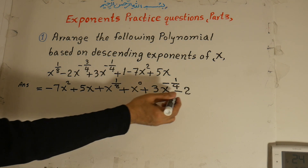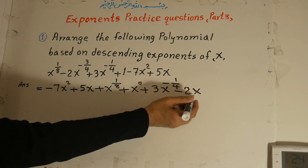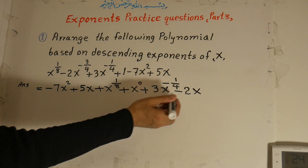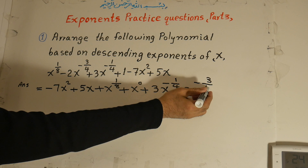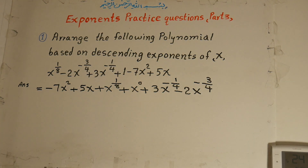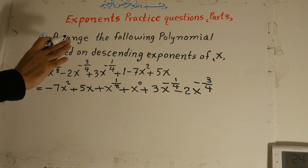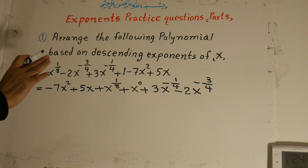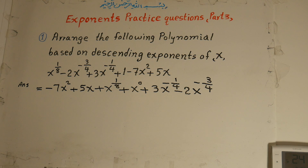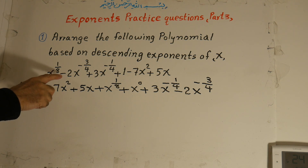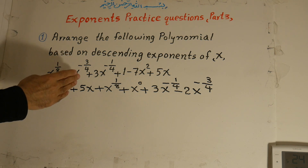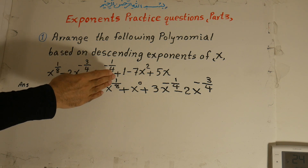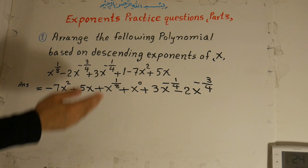Then minus 2x to the power of negative 1 over 4, and minus 3 over 4. Plus 3x to the power of minus 1 over 4. To repeat: arrange the following polynomial based on the descending exponents of x — x to the power of 1 over 8, minus 2x to the power of negative 1 over 4, plus 3x to the power of minus 1 over 4, plus 1, minus 7x to the power of 2, plus 5x.